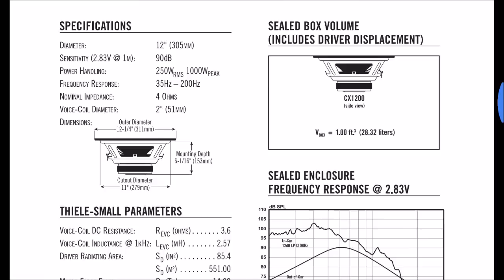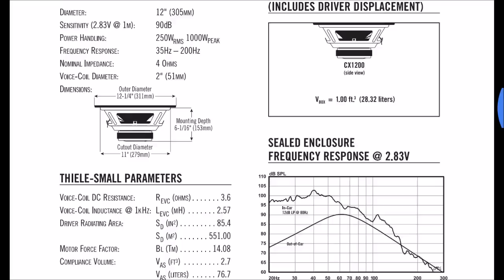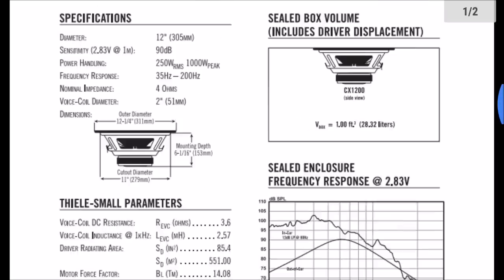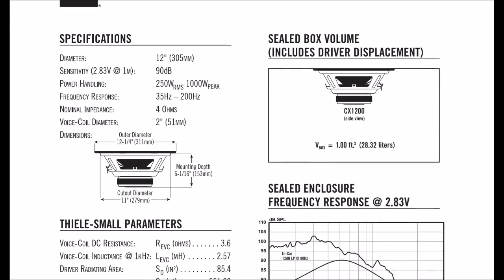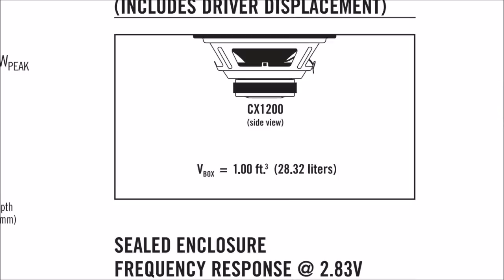This PDF has all the details — the driver size, TS parameters, and the box volume. The box volume is optimal. This is the CX1200 speaker data. Here is the V-box. This is the sealed enclosure — it is 1 ft³, which equals 28.32 liters.